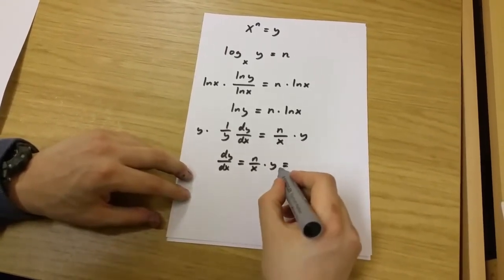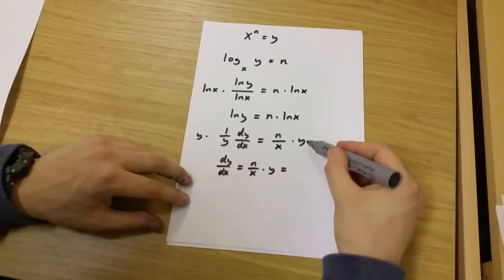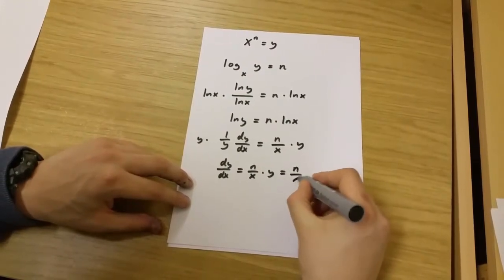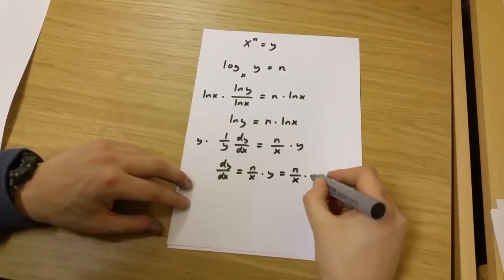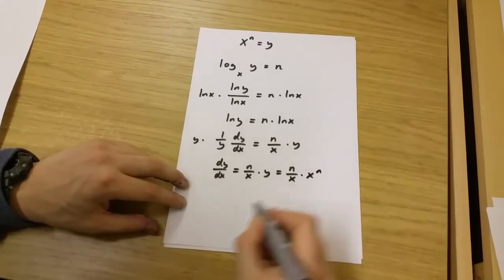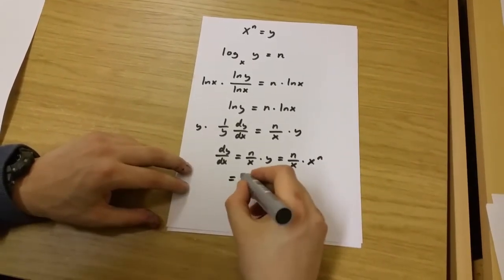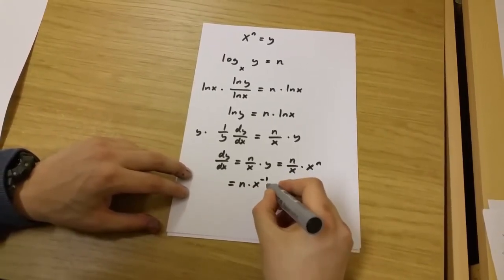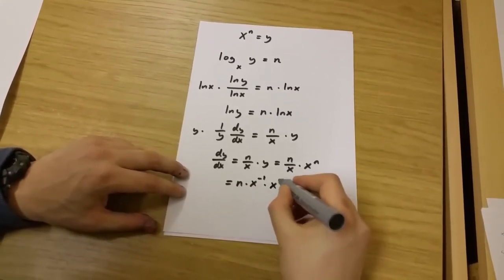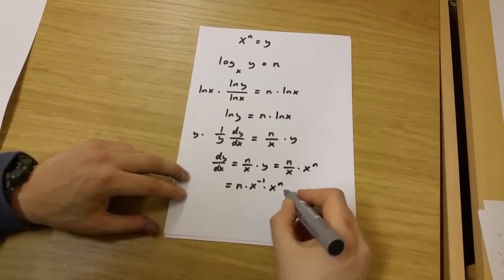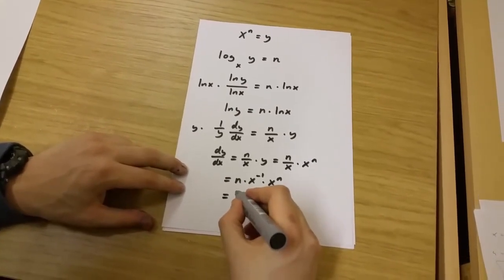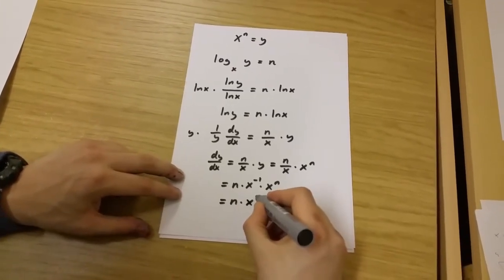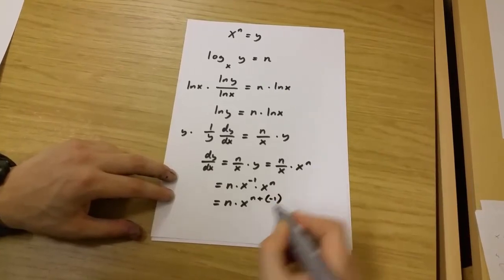Well, y is equal to x to the power of n, so we have n over x multiplied by x to the power of n. This is the same as n multiplied by x to the power of minus 1 multiplied by x to the power of n, which is the same as n multiplied by x to the power of n plus minus 1.